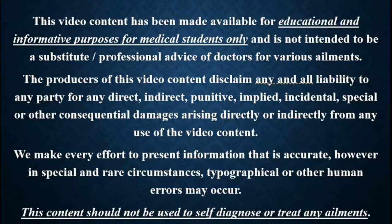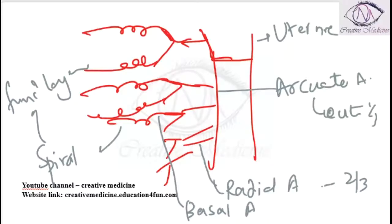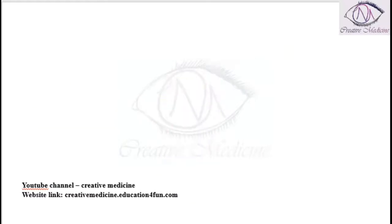In this lecture we will learn about the relationship of ureter and uterine artery. 2 cm lateral to the internal os or cervix is the uterine artery.